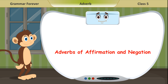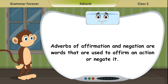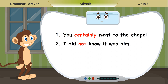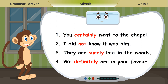Adverbs of Affirmation and Negation are words that are used to affirm an action or negate it. Examples: 1. You certainly went to the chapel. 2. I did not know it was him. 3. They are surely lost in the woods. 4. We definitely are in your favor.